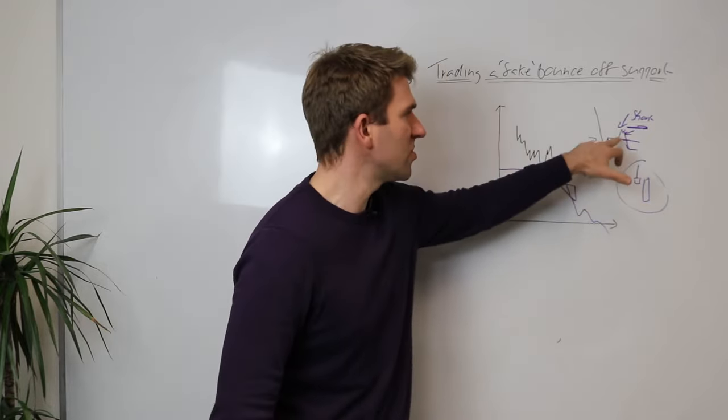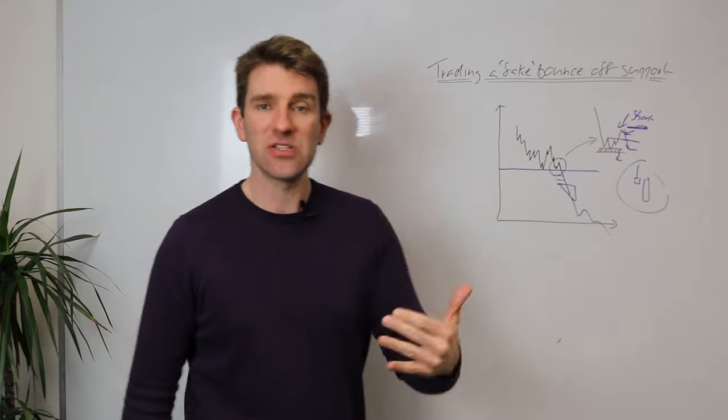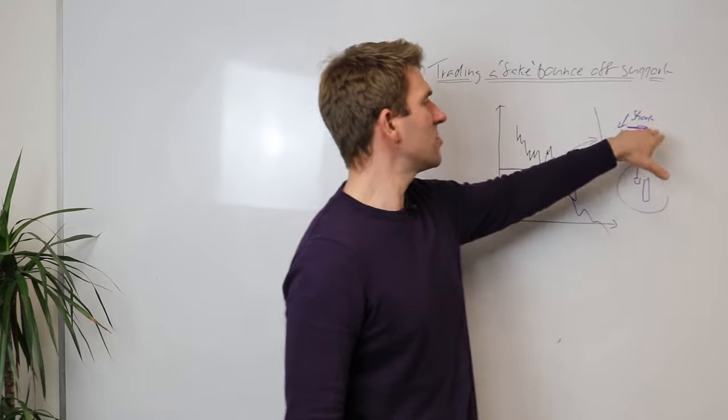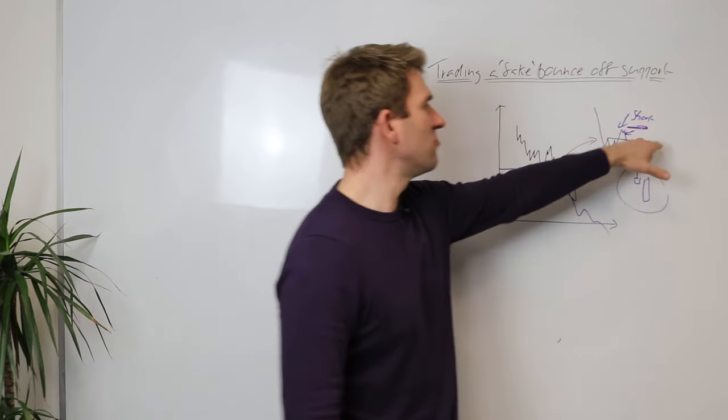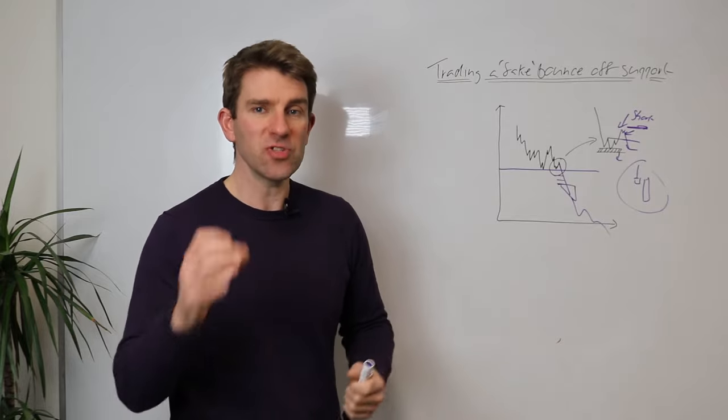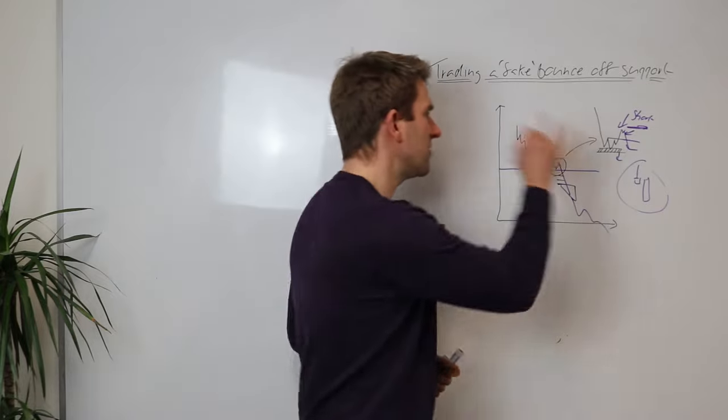Take the trade. Put your stop in. You've got to make sure you're not being caught on the reversal. If the conditions are right, it retests. People are buying. People are buying. You're basically preempting the people. You're taking the other side of the trade of the people who think this is a reversal.